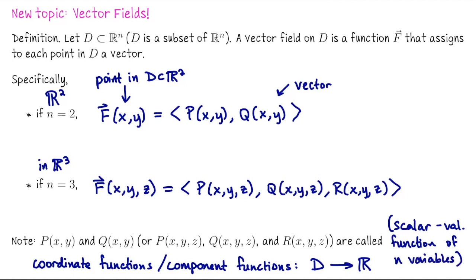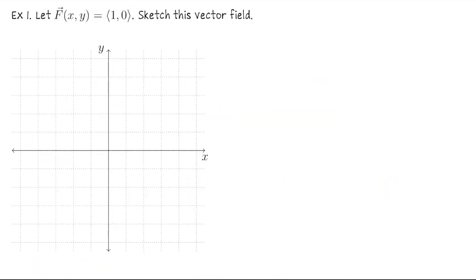The important big picture here is: a vector field is a way of saying, at this point, here's an associated vector. For the rest of this lecture, we're going to visualize some of these vector fields. For our first example, let's look at the vector field f(x,y) = (1, 0).